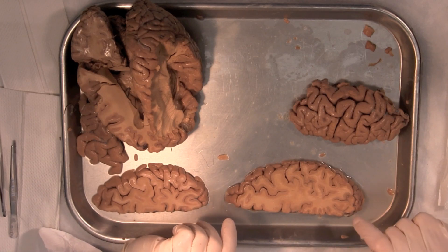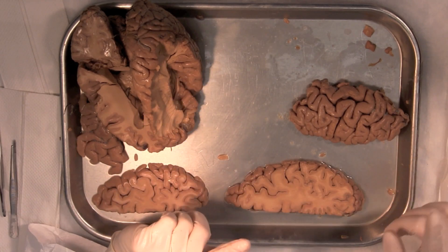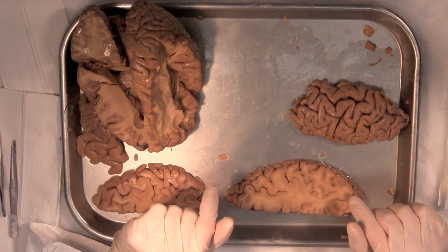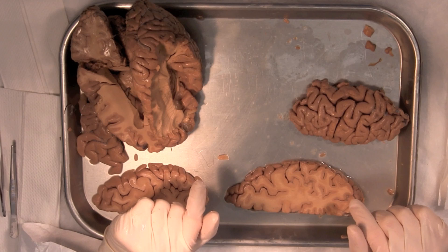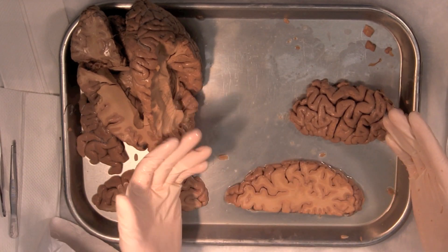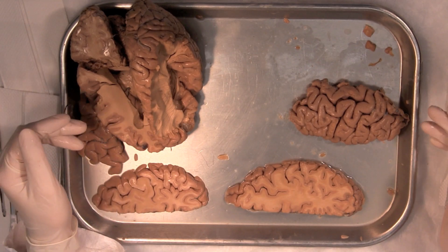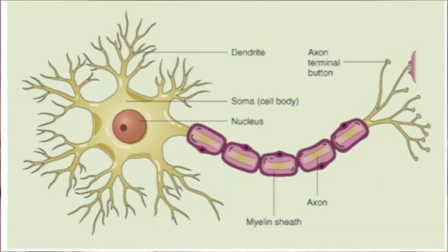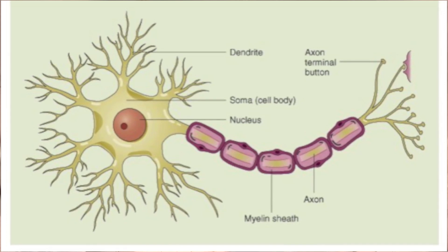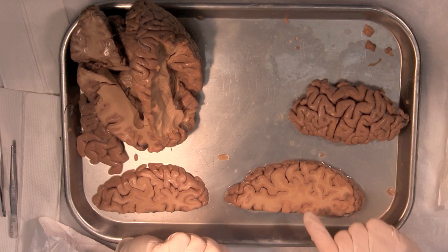Moving on to white matter — it's primarily made up of the axons of cells. When you're projecting an axon across a really large region of the brain, you want to ensure that the electrical signal doesn't die out before it reaches the receiving neuron, so you wrap an insulator around your axon. This insulator is called myelin — it's a fatty substance that wraps around long axons. It's this myelin that gives white matter its lighter appearance in the brain.